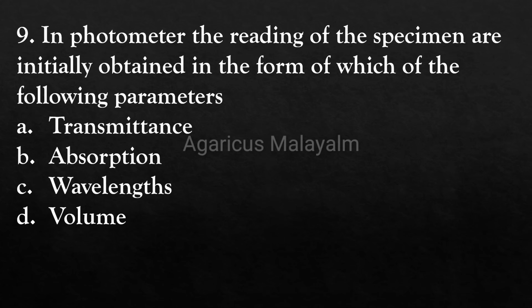Ninth question: In a photometer, the readings of a specimen are initially obtained in the form of which of the following parameters? Answer options: Option A - transmittance, Option B - absorption, Option C - wavelengths, Option D - volume. Correct answer: Option A - transmittance.